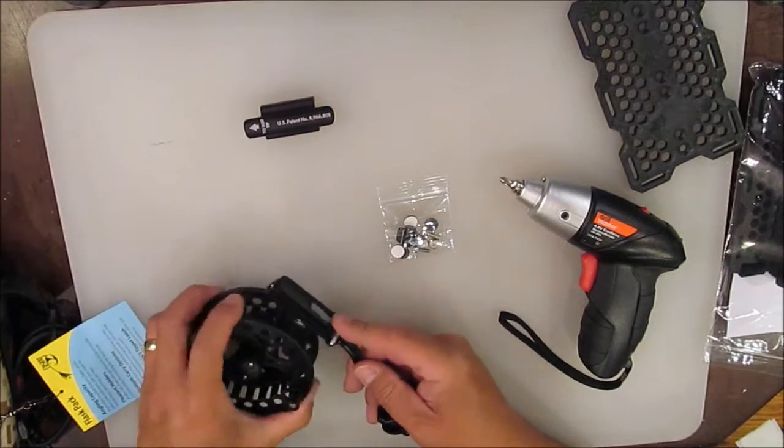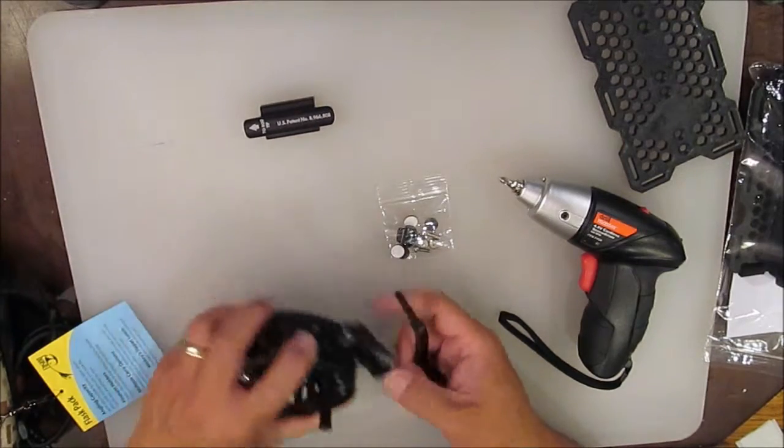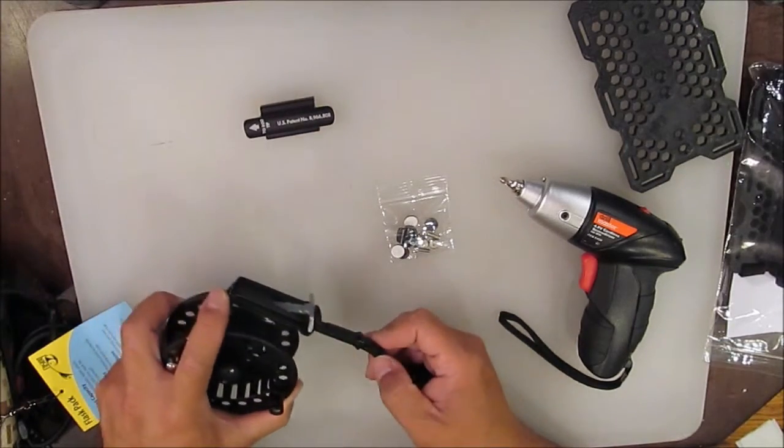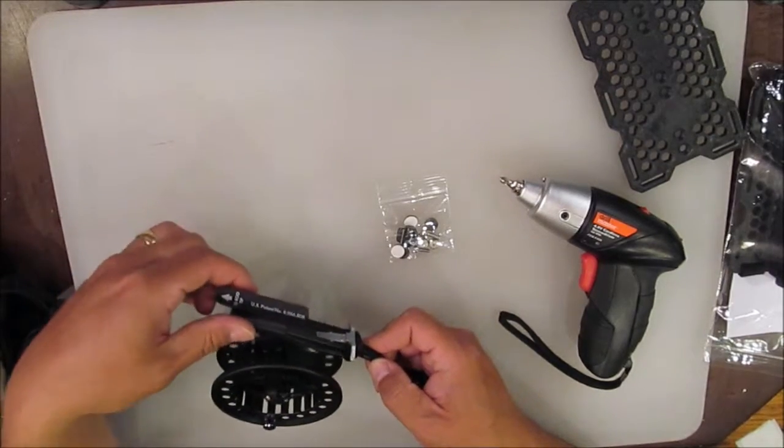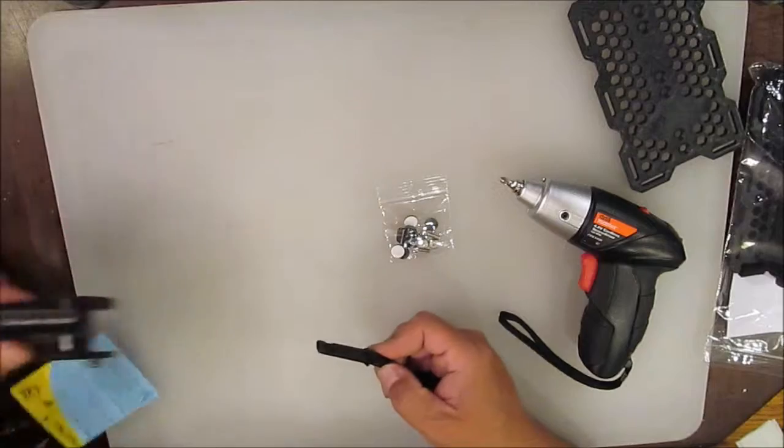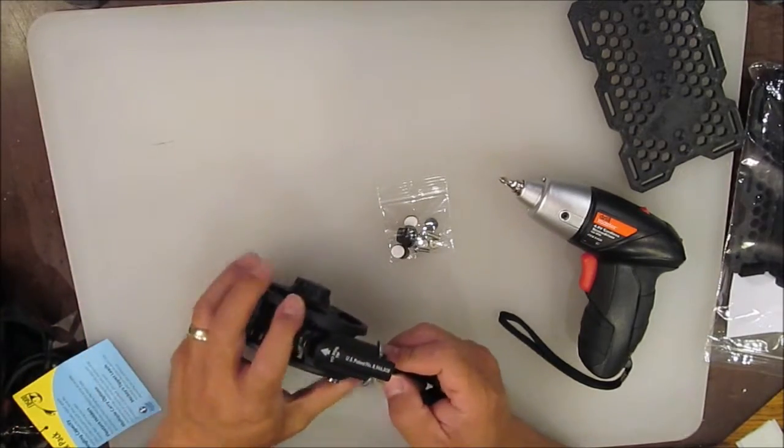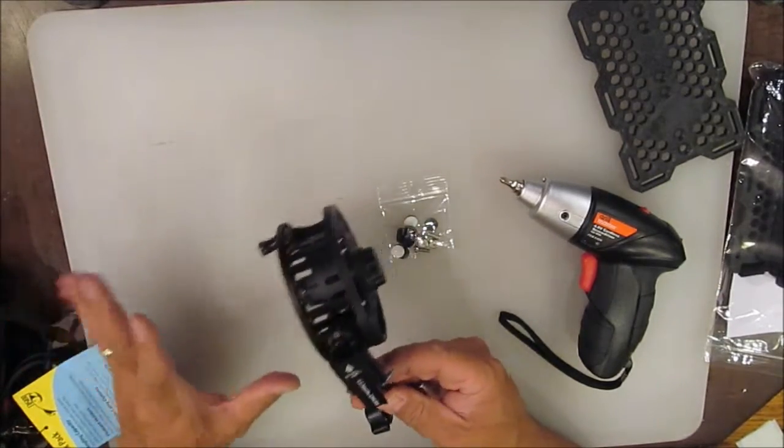With your reel attached onto the reel adapter, you slide that on, it locks in place. Whenever you reattach the rod, it's going to unlock it so it comes right off. When you're using this as a rod holder, you'll find it's not locked on, but gravity will hold it on just fine.